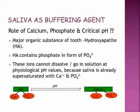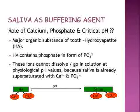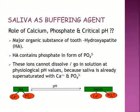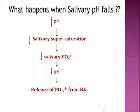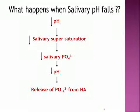The major organic substance of the tooth is hydroxyapatite crystals, which contain phosphate ions. These ions cannot dissolve at physiological pH because saliva is already supersaturated with calcium and phosphate ions. When salivary pH falls, saliva is no longer supersaturated, resulting in decreased salivary phosphate ion levels, which further decreases pH and causes release of phosphate ions from hydroxyapatite crystals.